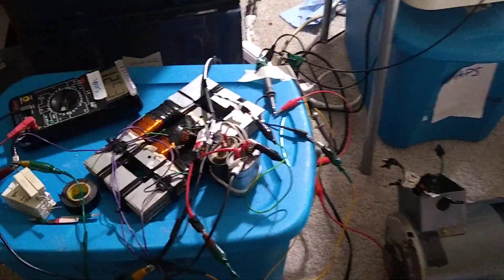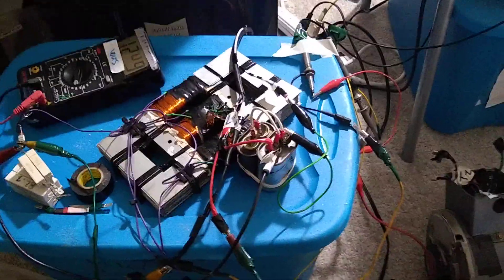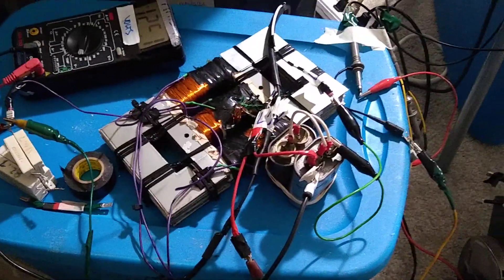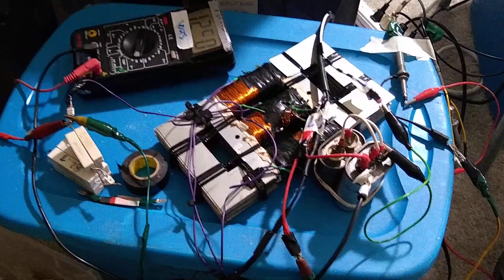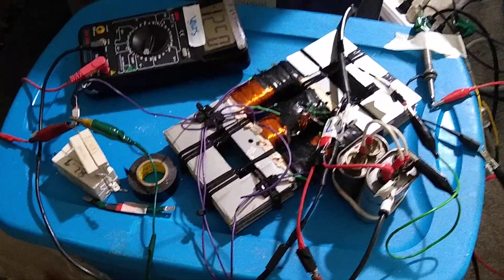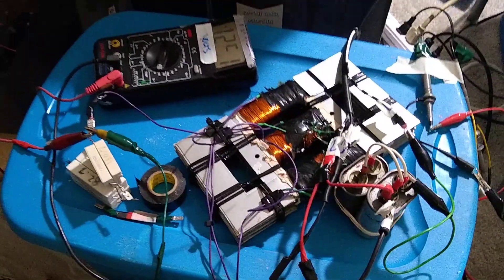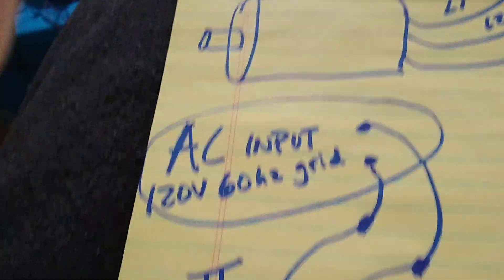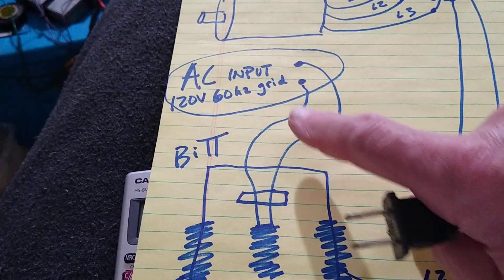OK, I now have the grid connected to the primary of the bit transformer. The AC 120 volts, 60 hertz, is connected to the primary of the bit transformer shown here.